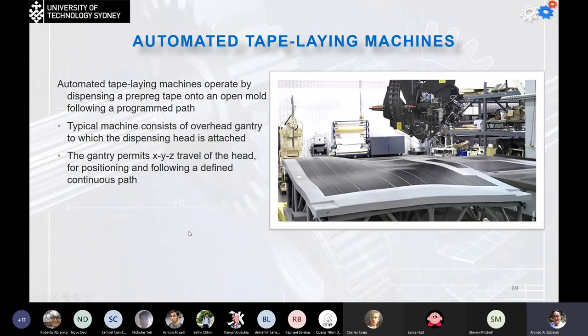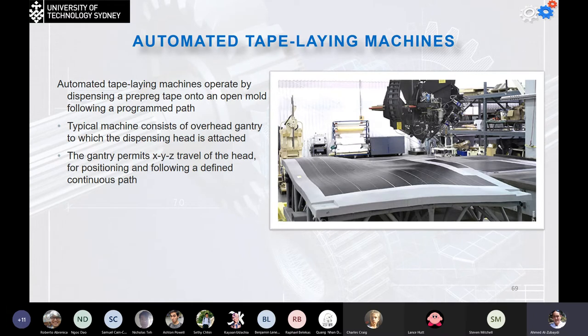The automated tape laying machine dispenses pre-preg tapes into the open mold following a programmed path, similar to adhesive tape application with binding material sprayed on and layers added continuously. After solidification, the part can be removed as a solid shape. A typical machine consists of an overhead gantry to which the dispensing head is attached, permitting movement in XYZ travel of the head as defined by the program.